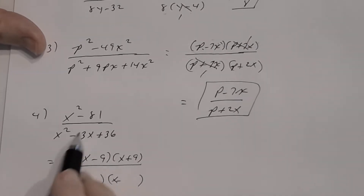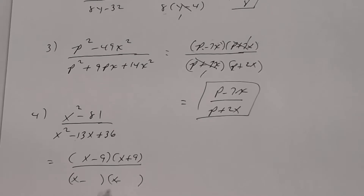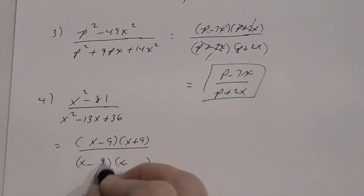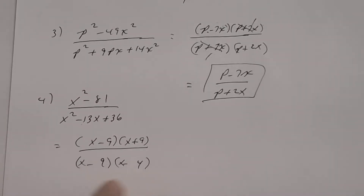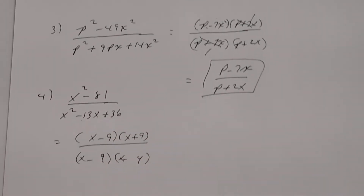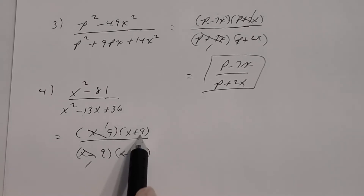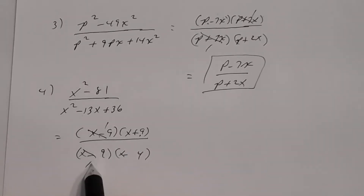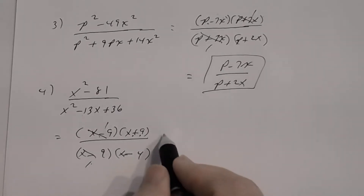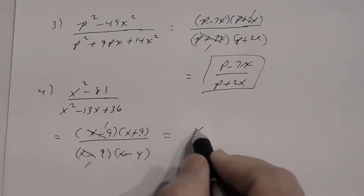For the denominator, I want −13x. Trying 6 and 6 gives −12x, so that doesn't work. Trying 9 and 4: −4x and −9x gives −13x. ✓ So the denominator factors as (x − 9)(x − 4). Reducing: (x + 9) cancels with (x + 9) in the denominator. (x − 9) cancels. The answer is (x + 9) divided by (x − 4).